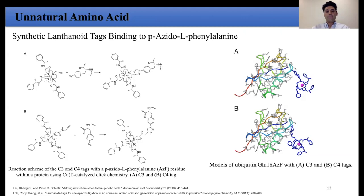About half of the target proteins exposed to click reaction conditions are found to precipitate. Also, if a HIS-tag is used for protein purification — which is frequently added for purification — it would interfere with the copper catalysis and must be cleaved off prior to the click reaction.